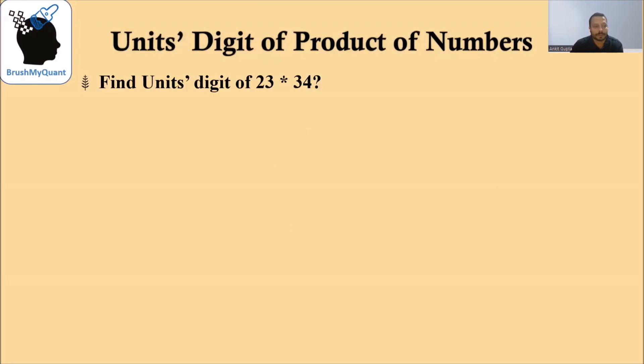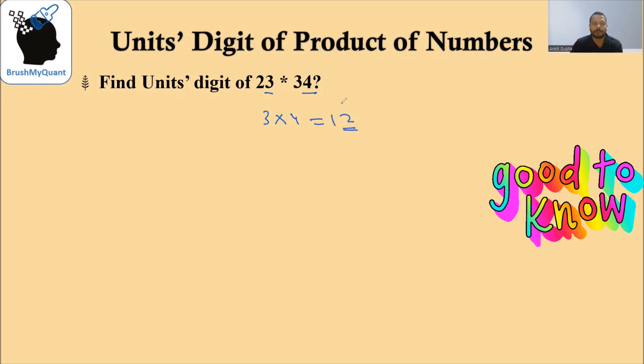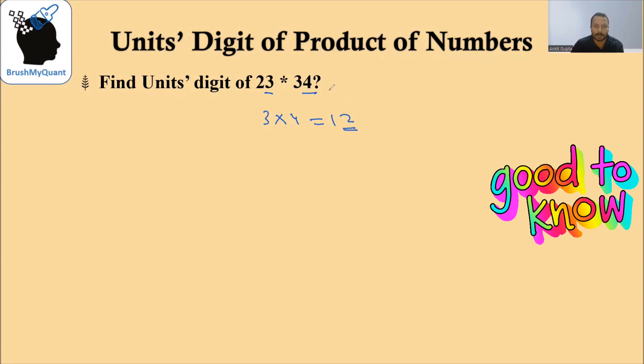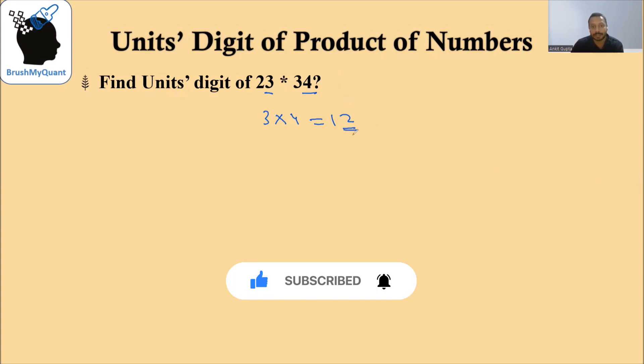Find the units digit of 23 multiplied by 34. Now, if you have to find the units digit of this product, we can take the units digit which is 3 and 4 and multiply them together to get the final units digit as 2. If we had more numbers, we would have multiplied the units digit of each and every one of those numbers and then eventually got the units digit of the final expression.